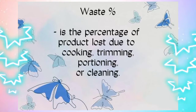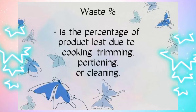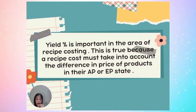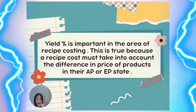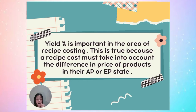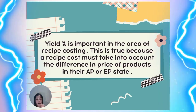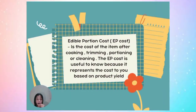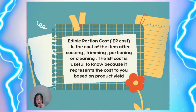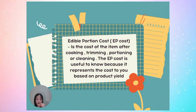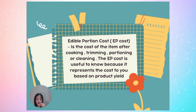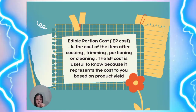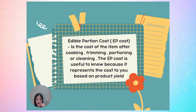Waste is the percentage of product loss due to cooking, trimming, portioning, or cleaning. Yield percent is important in the area of recipe costing because a recipe cost must take into account the difference in price of products in their AP or EP state. Edible portion cost (EP cost) is the cost of items after cooking, trimming, portioning, or cleaning, and it represents the cost to you based on product yield.